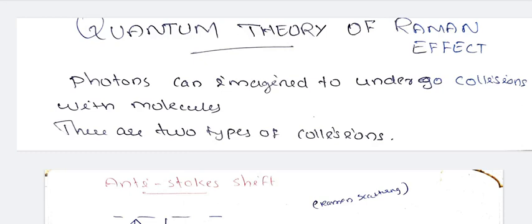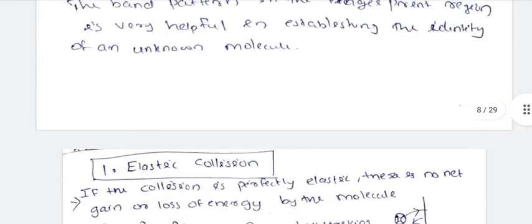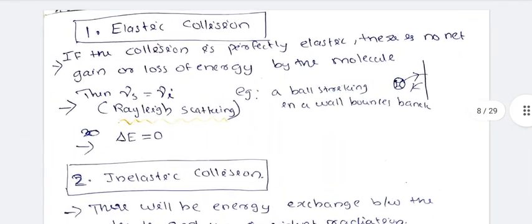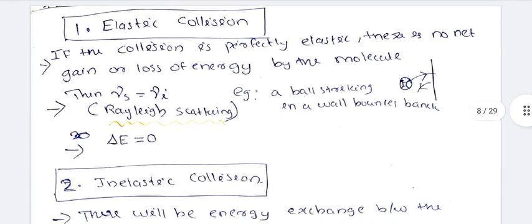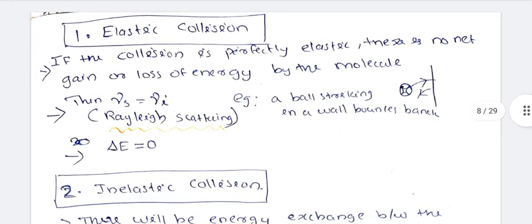There are two types of collisions. Photons will undergo collisions with the molecules. First, elastic collisions. Elastic collisions are perfectly elastic — there will be no gain or loss of energy by the molecules.